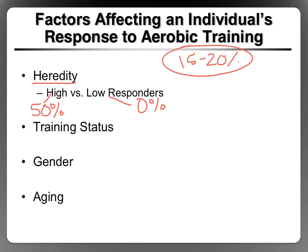How you respond to training also depends on your training status. If you're untrained to begin with, you have more room for improvement, so an untrained individual is going to have greater potential increases in VO2max than somebody who's already well trained. Men have a much greater potential for increasing their VO2max, again due to advantages of more fat-free mass, more hemoglobin, and larger air passageways.